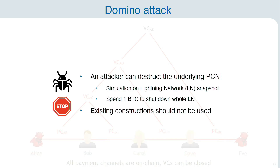The takeaway is that an attacker can not only interfere with the virtual channels themselves, but can really use this attack to shut down the underlying payment channel network itself. We did a simulation on the Lightning Network and have shown that it takes only around one Bitcoin for an attacker to shut down the whole Lightning Network. We really want to emphasize that these existing constructions should not be used in practice.